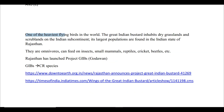GIBs are omnivores — they feed on insects, small mammals, reptiles, crickets, and beetles. Rajasthan has launched Project GIB, also referred to as Project Godawan, mainly to conserve this species as it is their state bird. GIBs are critically endangered — a very important topic for UPSC Prelims, not just for this year but every year. Two reference links have been provided.